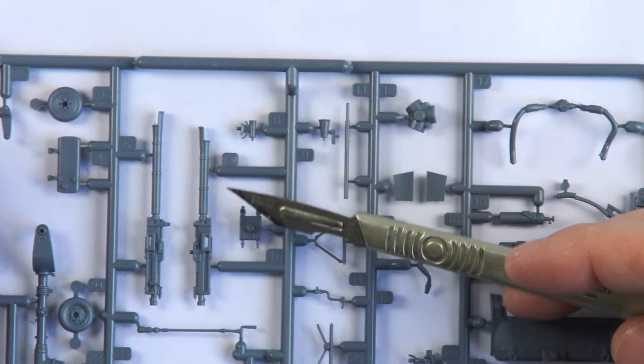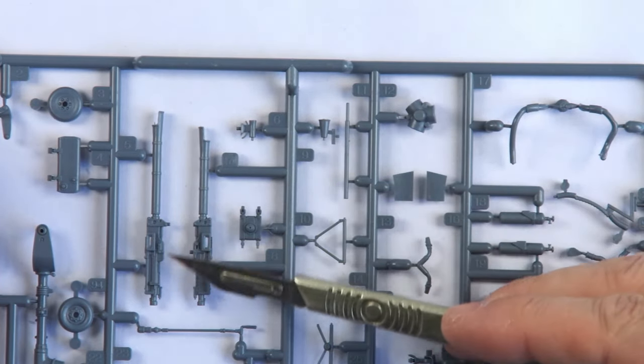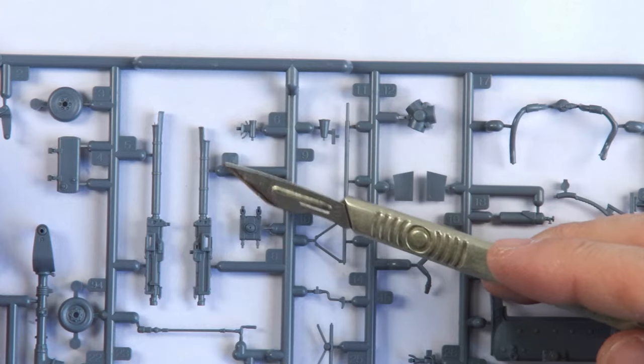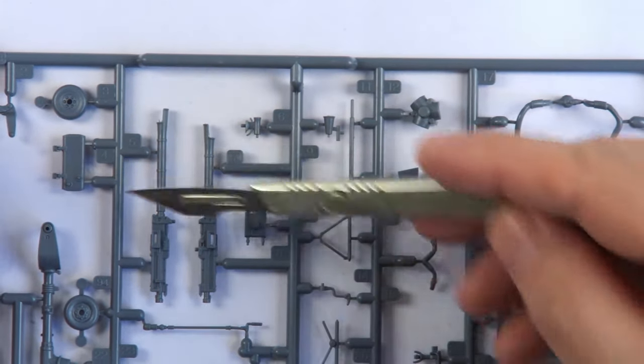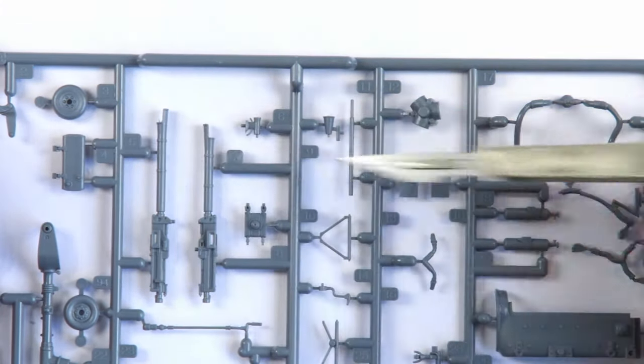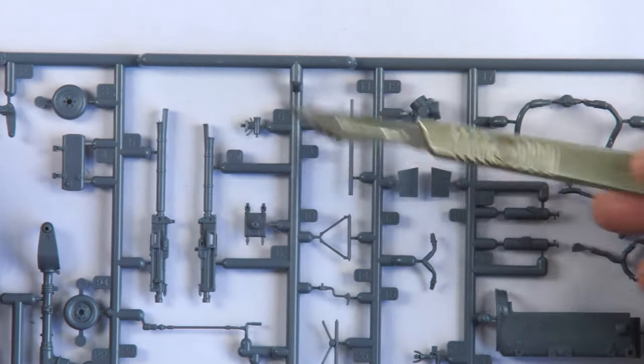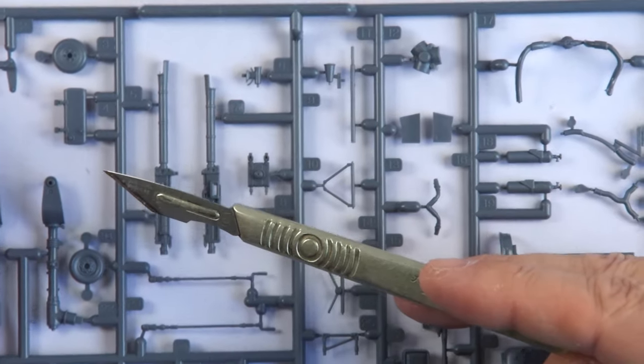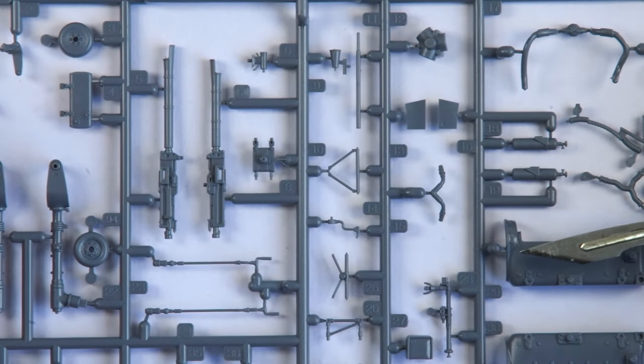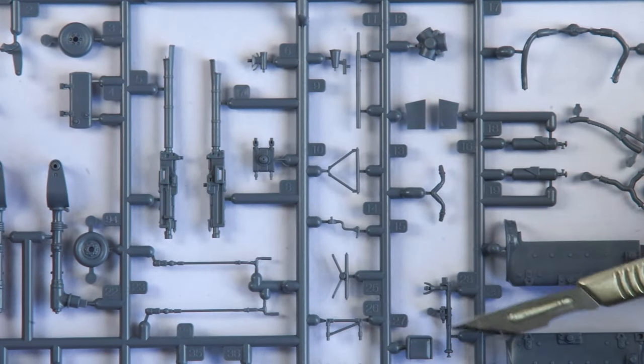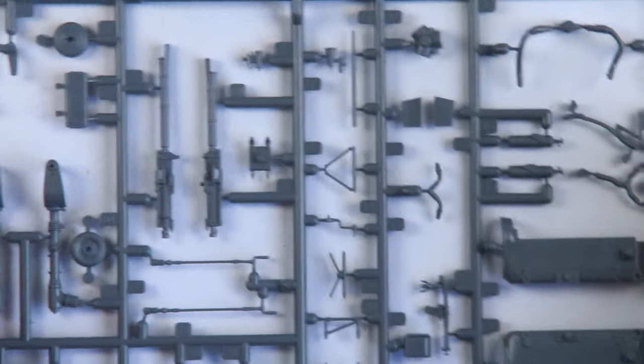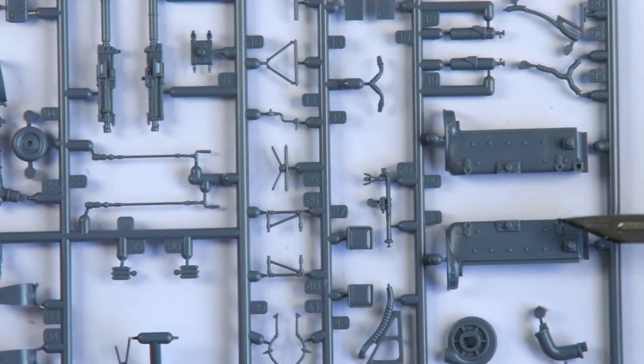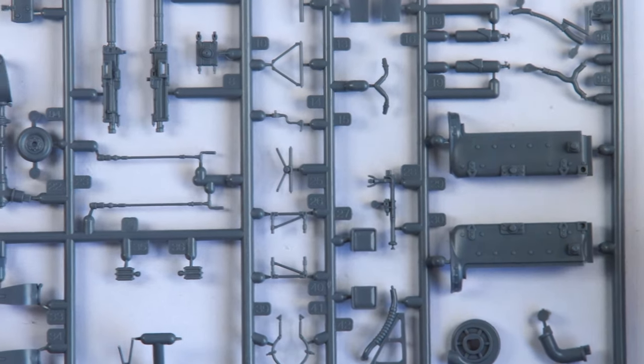Here you can see the pair of Bredas again, with their staggered muzzles, as well as a lot of the smaller details for the cockpit and engine. The main engine block and other engine pieces are also present here.